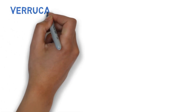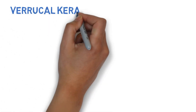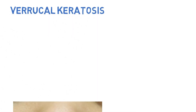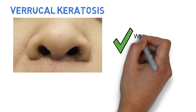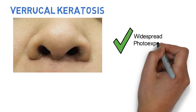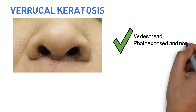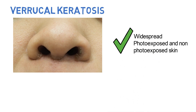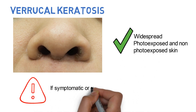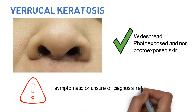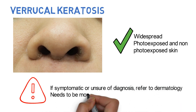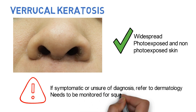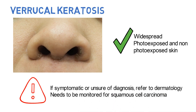Verrucal keratosis is characterized by verruciform, wart-like, white keratotic papules. It is often widespread in distribution and affects both photoexposed and non-photoexposed skin. If the patient is symptomatic or you're unsure of the diagnosis, refer to dermatology. The lesion needs to be monitored for changes suggestive of squamous cell carcinoma.